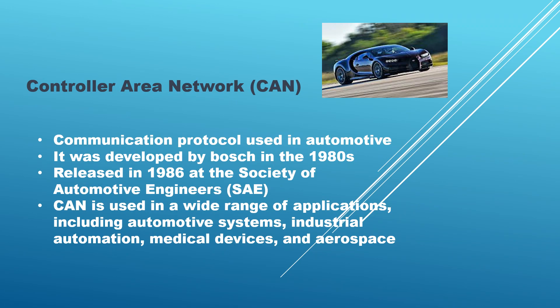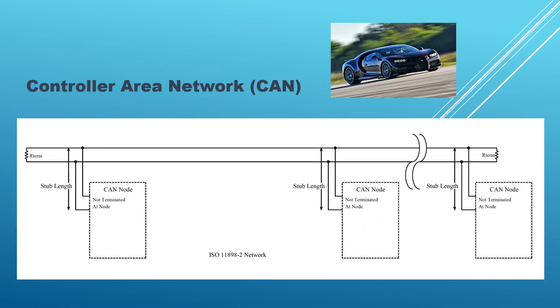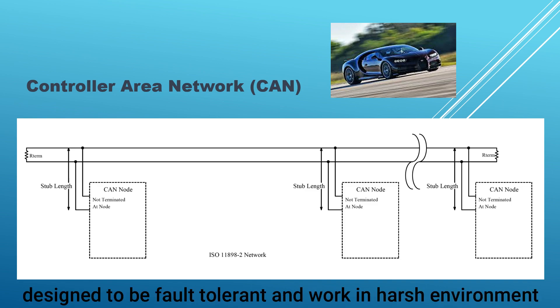CAN is used in a wide range of applications, including automotive systems, industrial automation, medical devices, and aerospace. CAN is a bus-based communication system that uses a single pair of wires to transmit and receive messages. It is designed to be reliable and fault-tolerant, even in harsh environments with high levels of electrical noise.